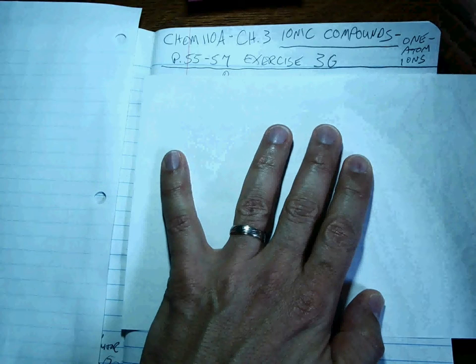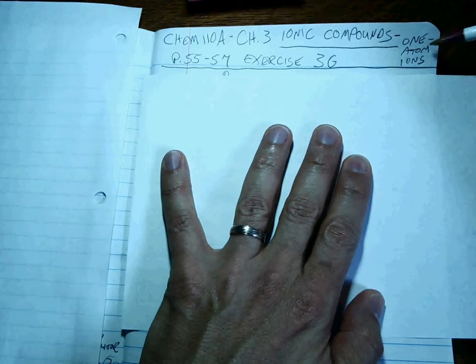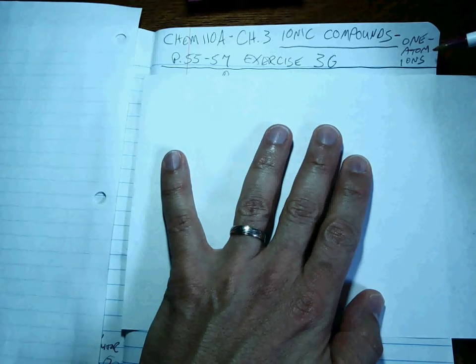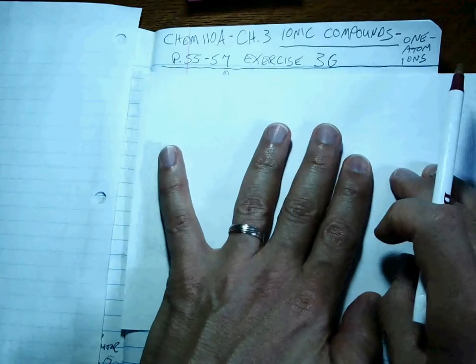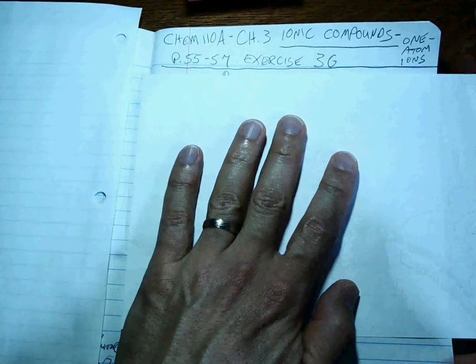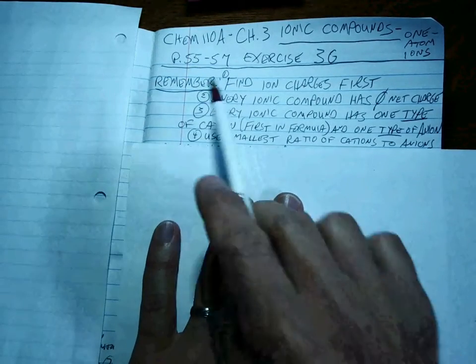Welcome back. We are still in chapter 3, doing ionic compounds for one atom ions, monoatomic ions. That's page 55 through 57, exercise 3G. And there's some stuff that you always have to remember. Remember, this is basically our methodology.